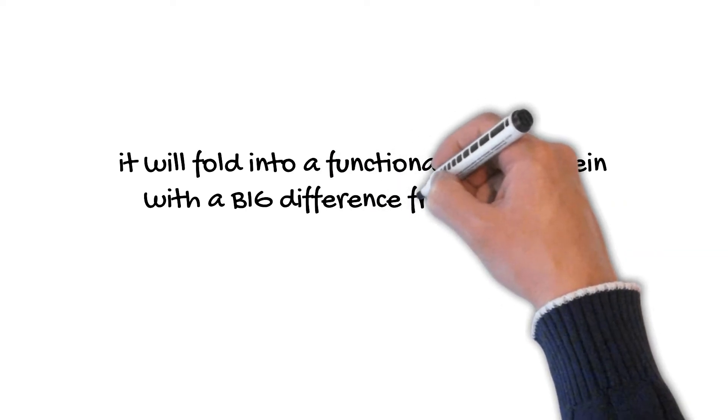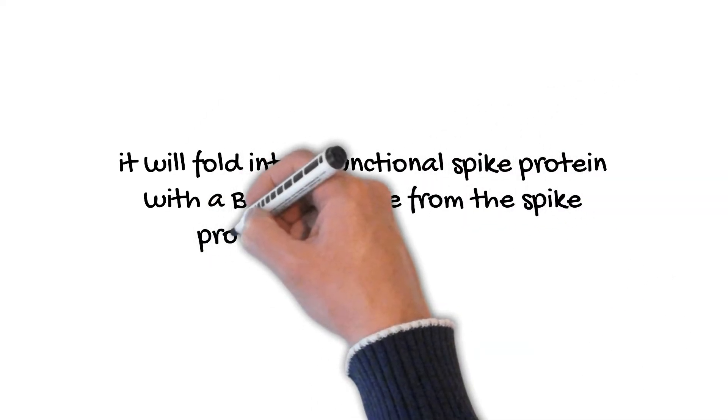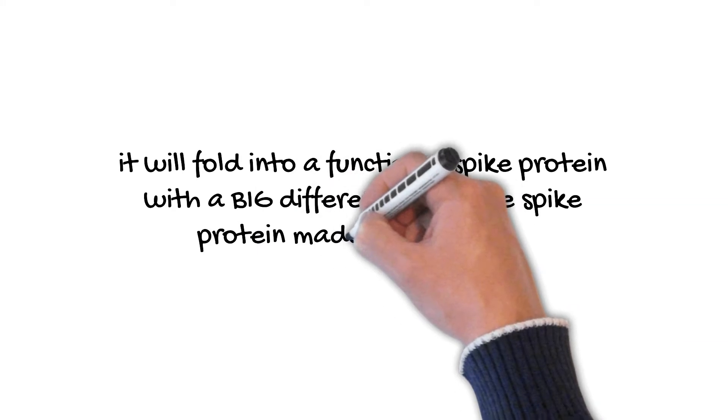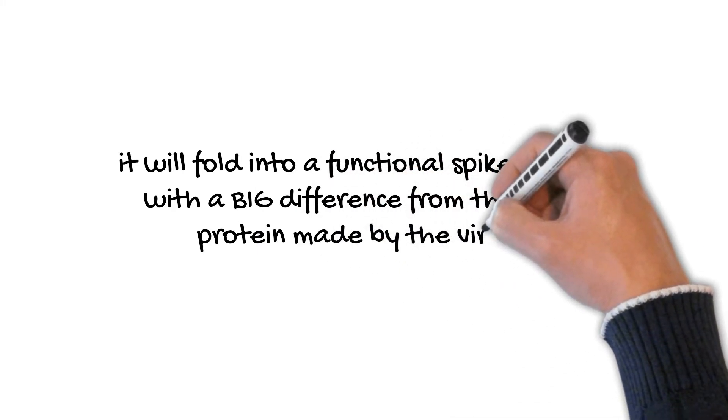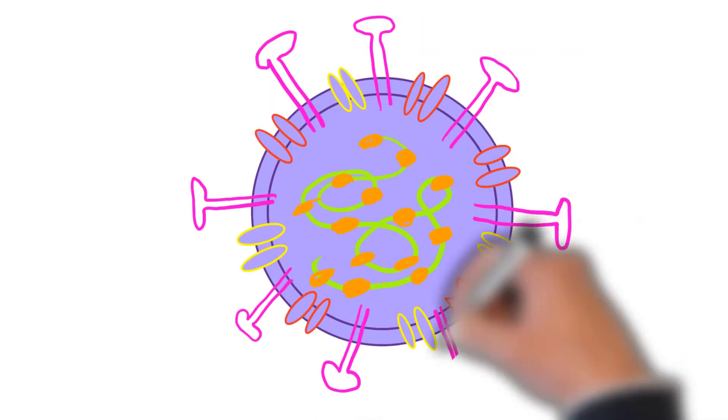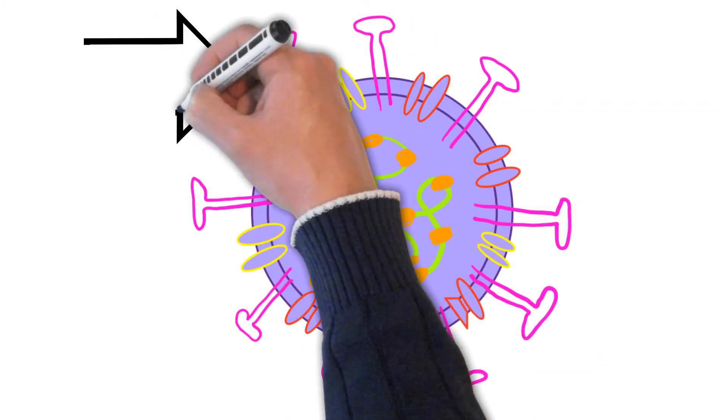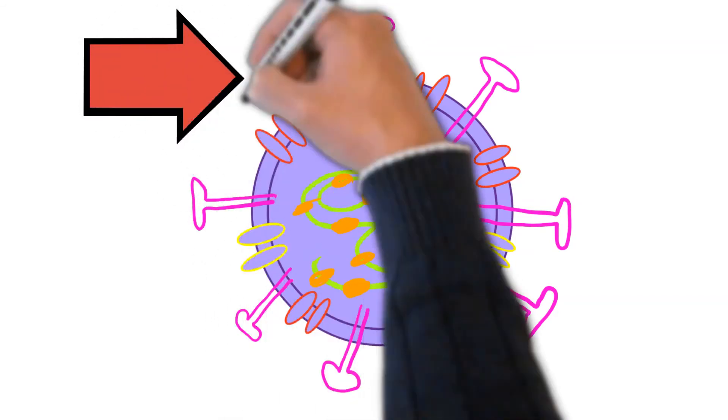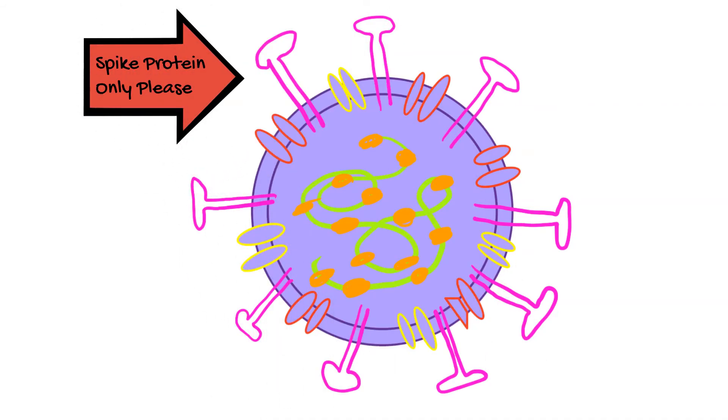As a result, it will be folded into a functional spike protein with a big difference. And that big difference is that it doesn't include the rest of the virus. So, it will fold into the functional spike protein with the big difference from the spike protein made by the virus.